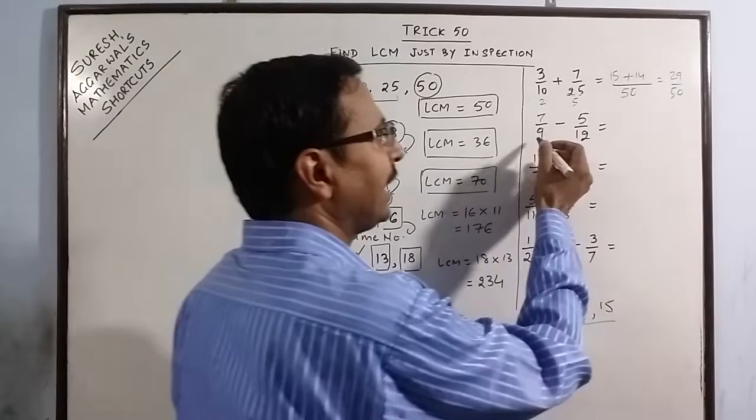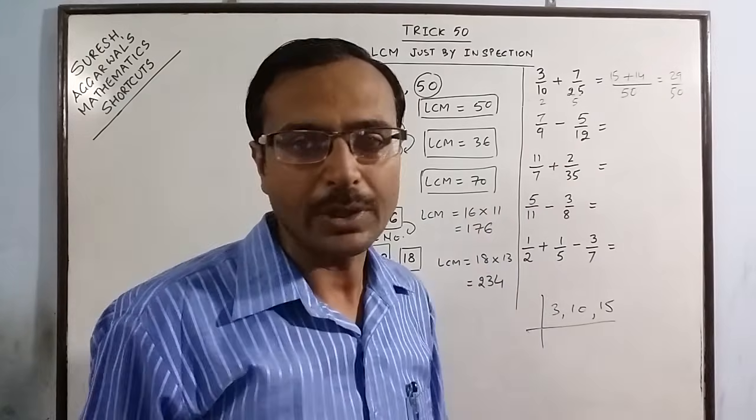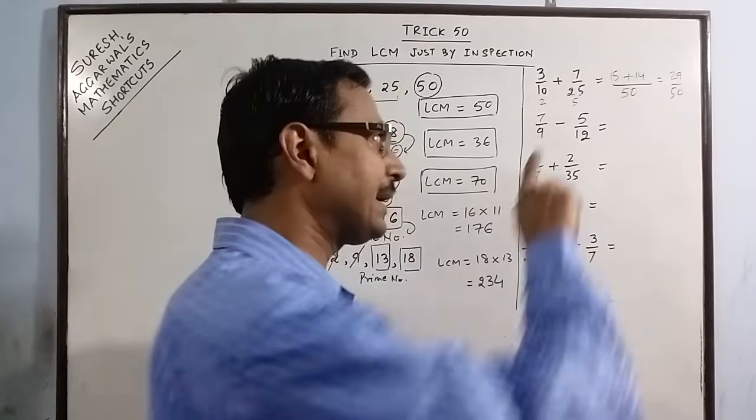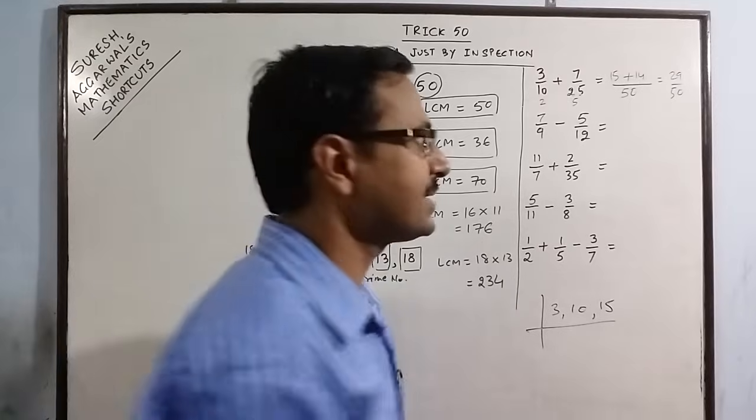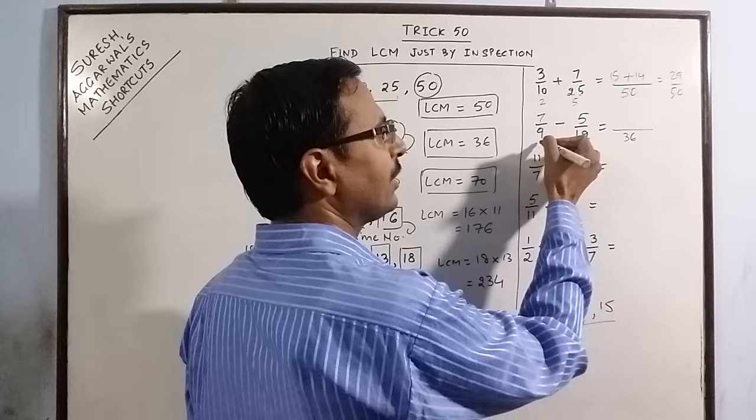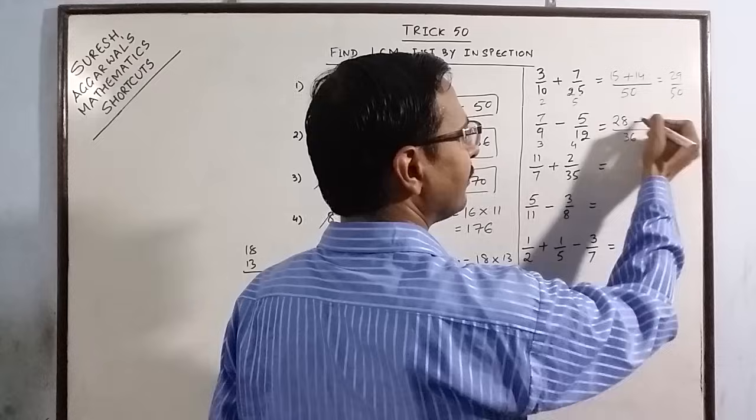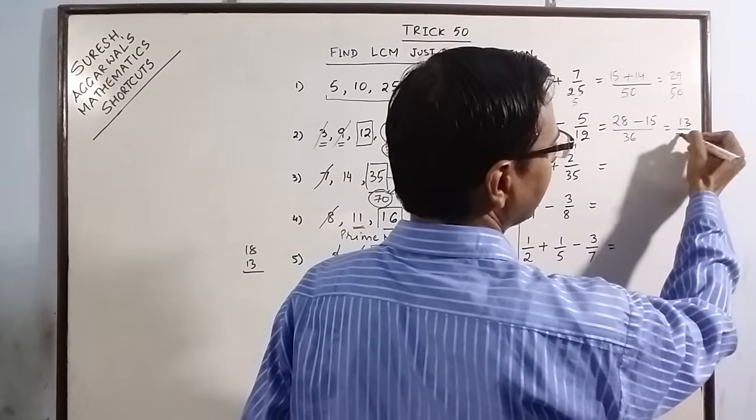Yet another 9 and 12. 9 does not divide 12. So take multiples of 12: 12 twos are 24. Again 9 does not divide 24. Take next multiple 36. 9 fours are 36. So 36 is the LCM. Now 9 and 12 they come in the table of 3. 3 threes are 9, 3 fours are 12. 7 fours are 28, 5 threes are 15. So your answer is 13 upon 36.